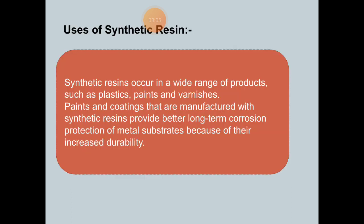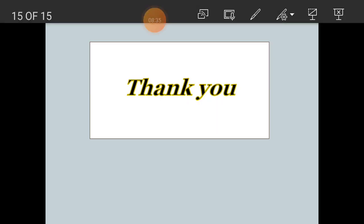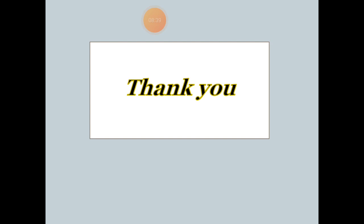Uses of synthetic resin: synthetic resin produces a wide range of products such as plastics and various types of paint used for painting purposes and varnish. Paints and coatings manufactured with synthetic resins provide better long-term corrosion protection of metal substrates because of their increased durability. In this way, in these slides and online lecture, we have discussed natural, synthetic, and polymer resin, which are part of polymer matrix composites. Thank you.